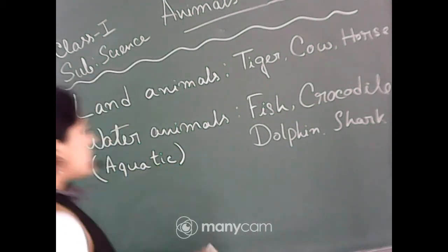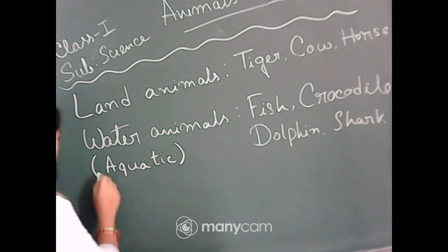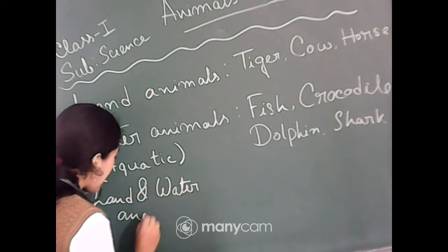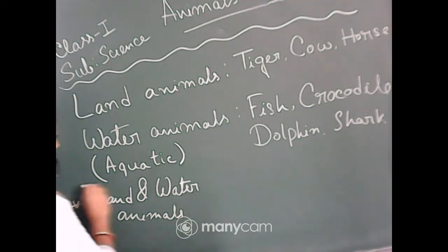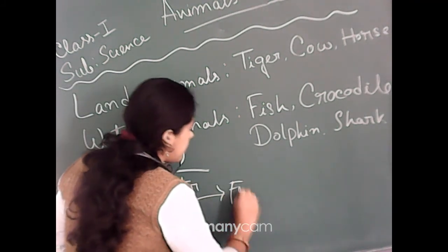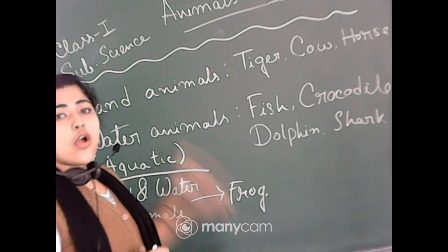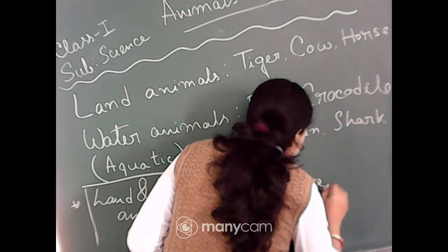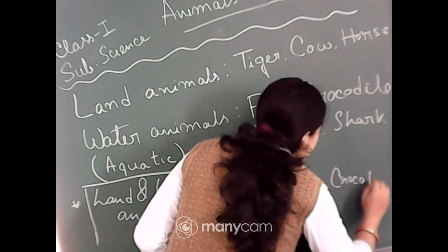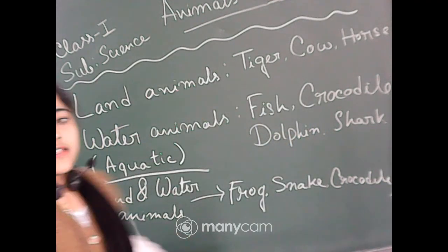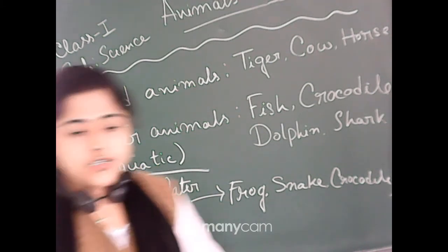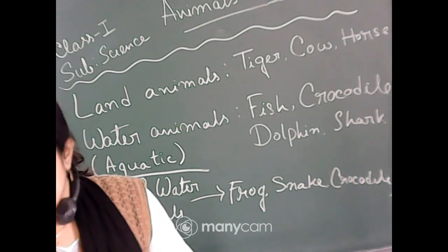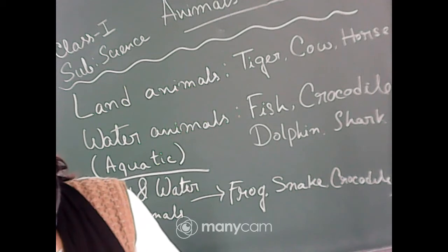These animals live in both land and water. So frog, snake, and crocodile — you have to remember their names because they are not land animals and not water animals — they are both. Very good, Bithika, Koustov, Zarin, Niladri. You have to remember those examples. That's very important and interesting.